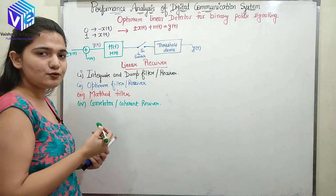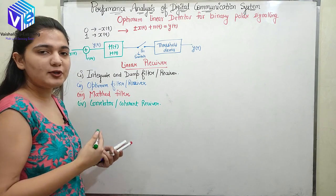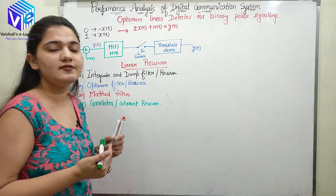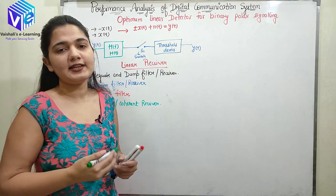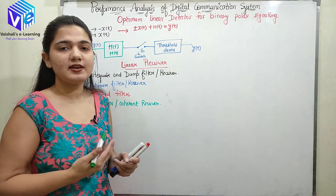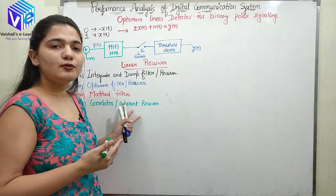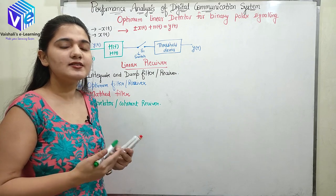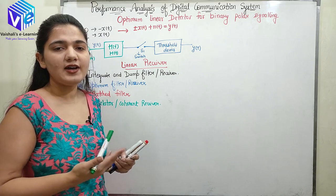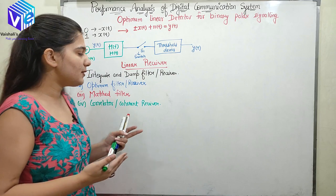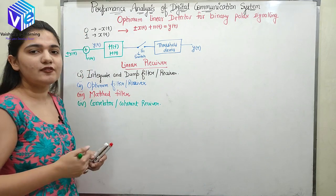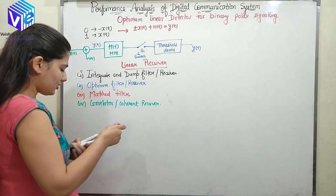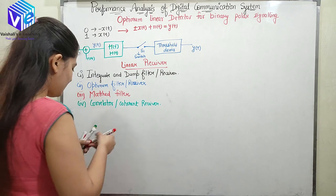We will be talking about the probability of error of all the coherent receivers we have discussed before — ASK, PSK, FSK — these were all coherent receivers. In these coherent receivers there is some probability of error at the output, so we'll be discussing the probability of error of all these coherent receivers.